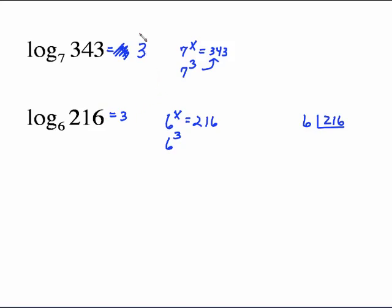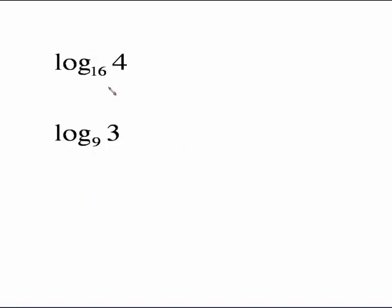Those are all the ones I'd consider straightforward. Once you do enough of them, you can do a lot in your head. Your basic values you should be able to do mentally — like log base 5 of 25. All we're saying is: what power would you put on 5 to make 25? That's simple — the power is 2.